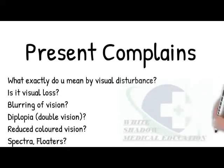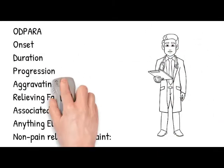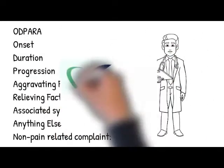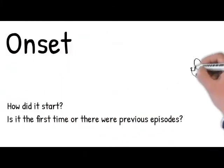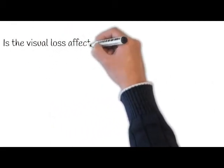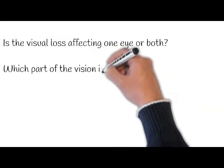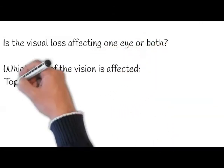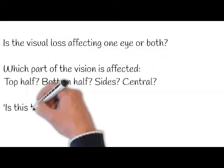Let's ask further details using mnemonics. Onset — how did it start? What were you doing when it started? Is it the first time or were there previous episodes? Is the visual loss affecting one eye or both? Which part of the vision is affected — top half, bottom half, sides, or central?